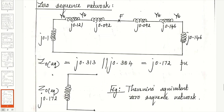For the zero sequence network, use the X0 new per unit values of all components and note the transformer configuration and grounding of the generator and motor neutral points. Both sides of both transformers and the machine neutrals are solidly grounded, so the series switches are closed — no delta configuration. The series combination of 3 reactances in parallel with the series combination of 3 more reactances gives Z0 equivalent as j0.172 per unit. The Thevenin's equivalent zero sequence network consists of only Z0 equivalent.